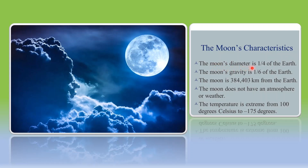The Moon's diameter is only one fourth of that of the Earth. The Moon's gravity is only one sixth of the Earth's — so if you weigh 36 kg on Earth, you will only weigh 6 kg on the Moon. The Moon is about 3,84,403 km away from the Earth. The Moon does not have an atmosphere, so it does not have any weather, and does not have water either, so life can never propagate on the Moon.